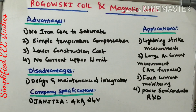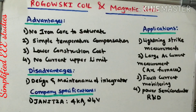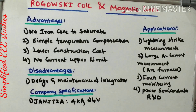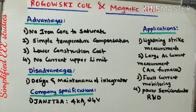On the other hand, there are a few drawbacks. The design is somewhat complicated, requiring mathematical analysis. Moreover, the integrator used is also somewhat difficult to design, and the integrator components are too delicate to maintain. These are the main drawbacks of the Rogowski coil.